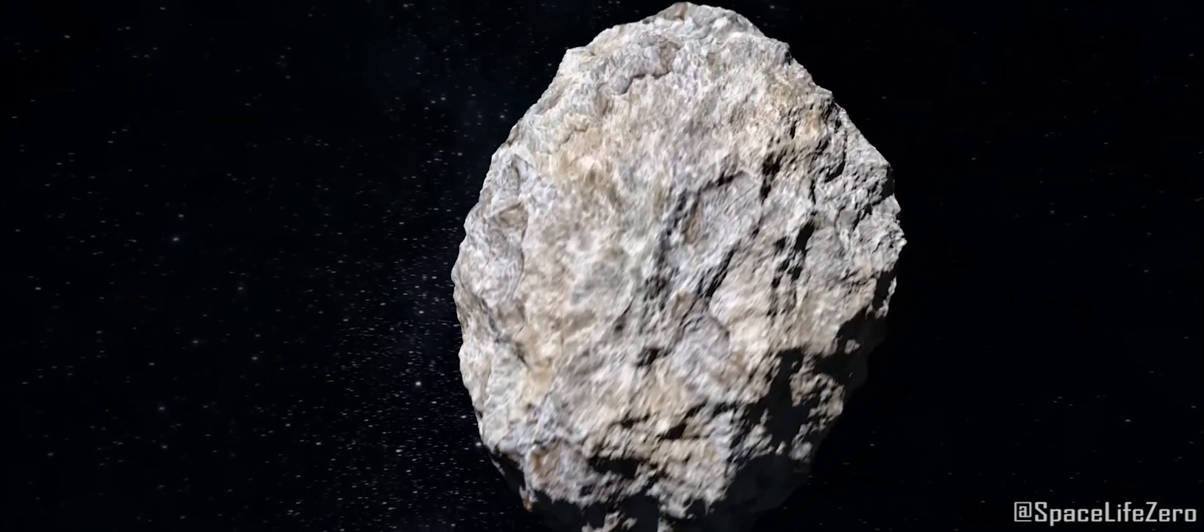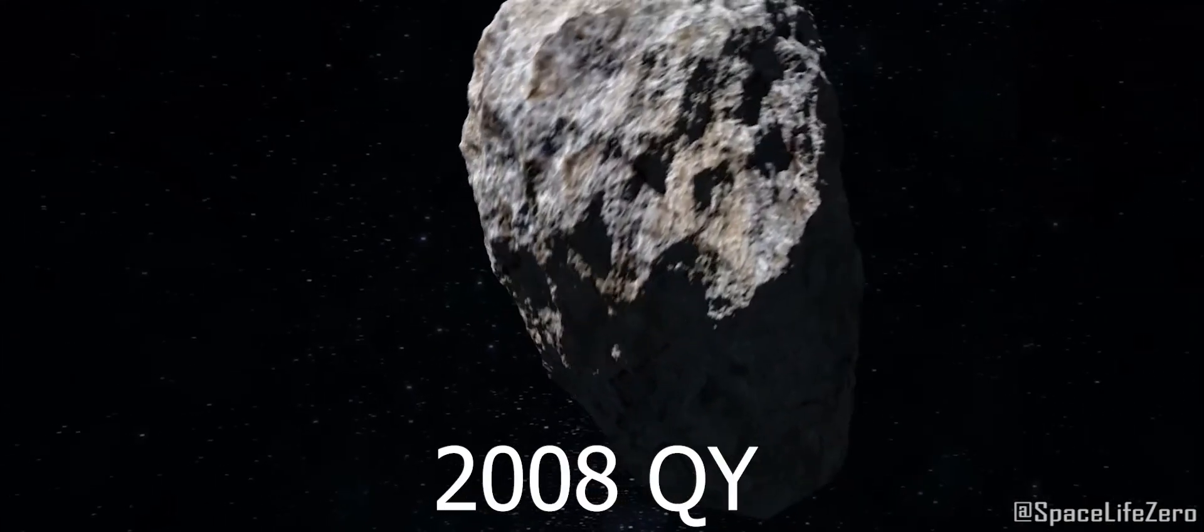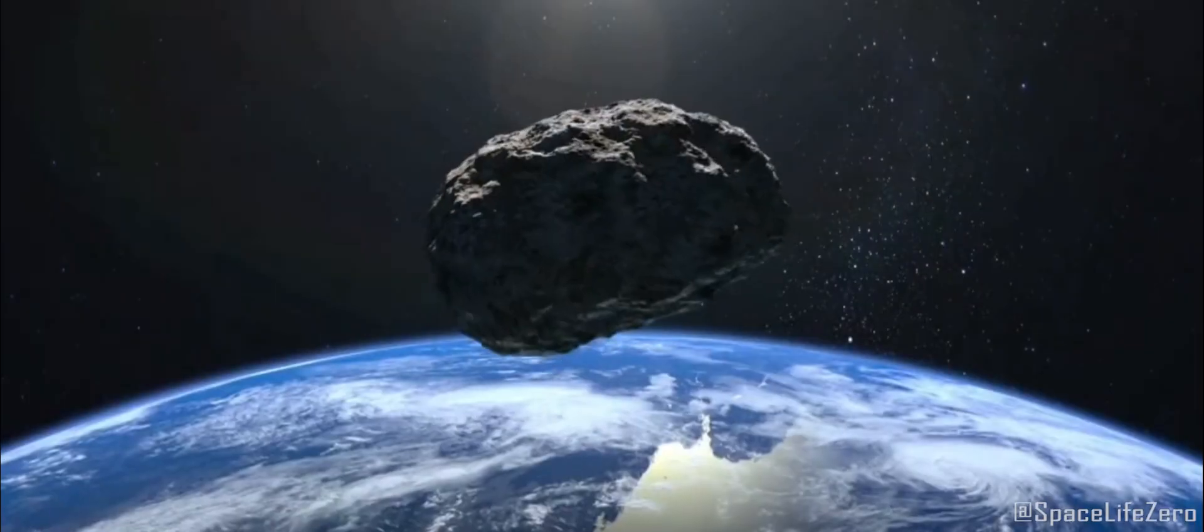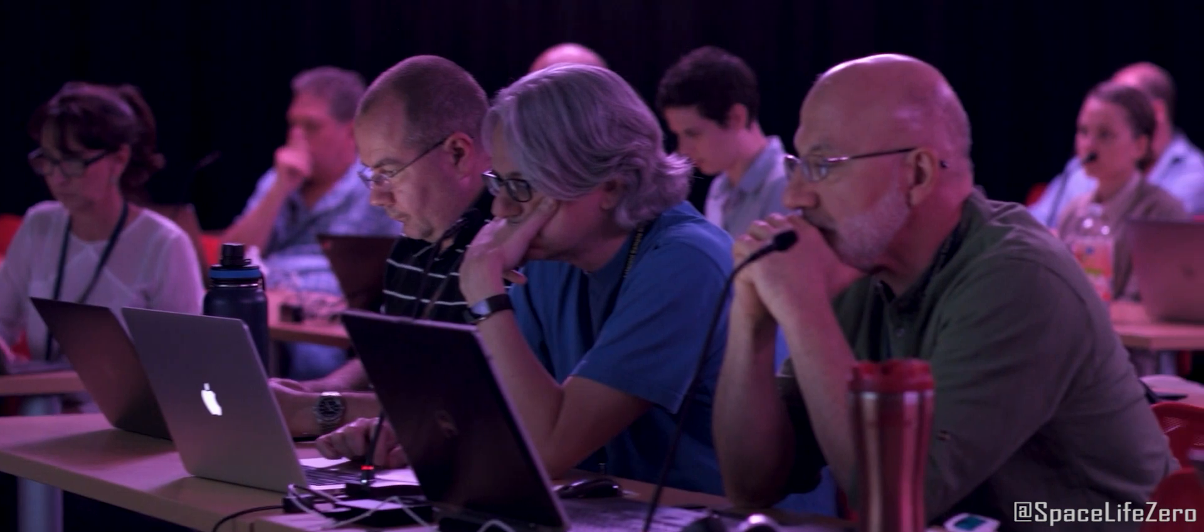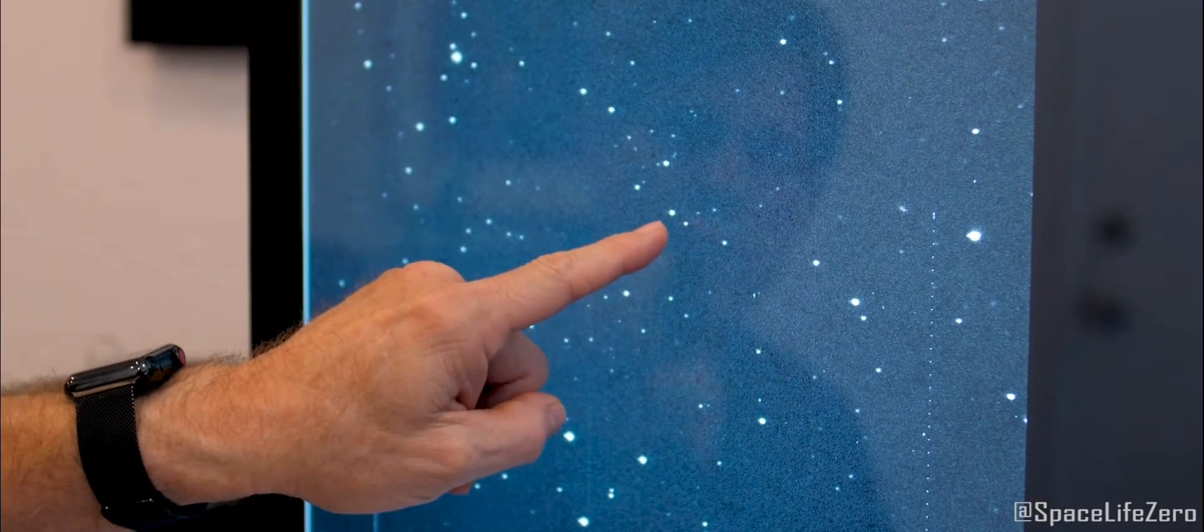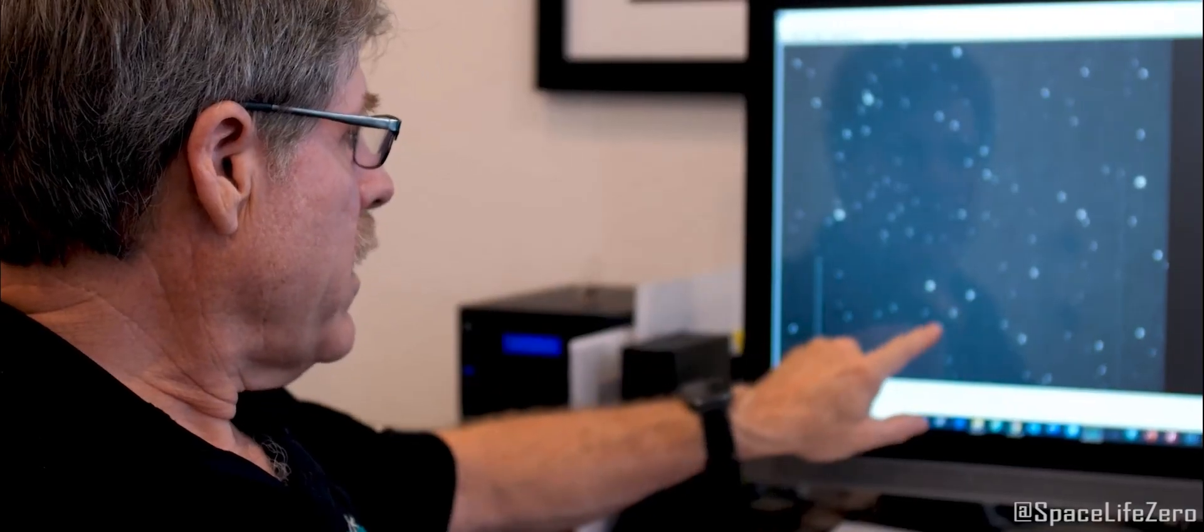On October 3rd, 2023, a potentially hazardous asteroid known by the name 2008QY is going to have a close encounter with our planet Earth. But before you start panicking, let's dive into the details and understand what this means for us.